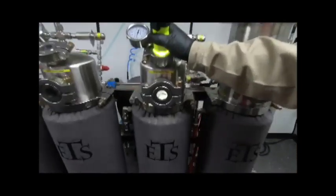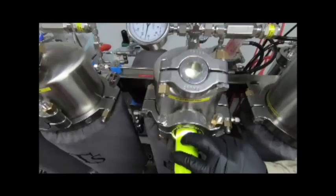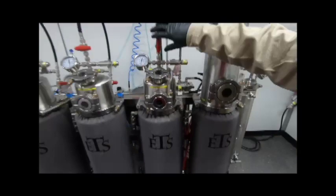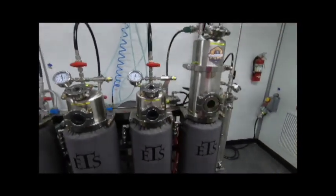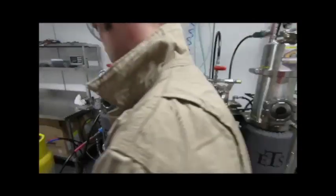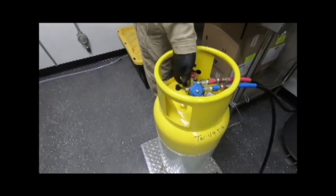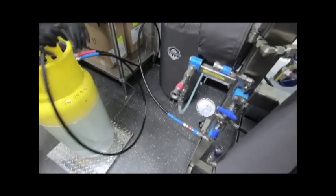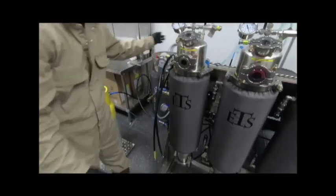Once extraction vessel three is filled, close red inlet valve located at the top of extraction vessel number three. Close red valve located at the top of operating tank. Zero out the scale.